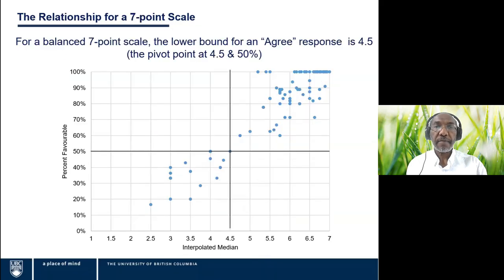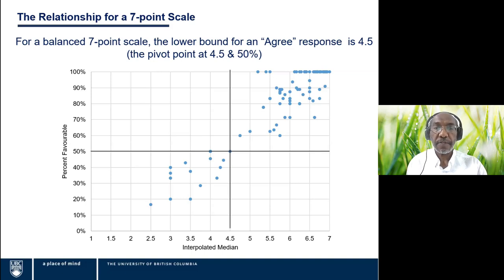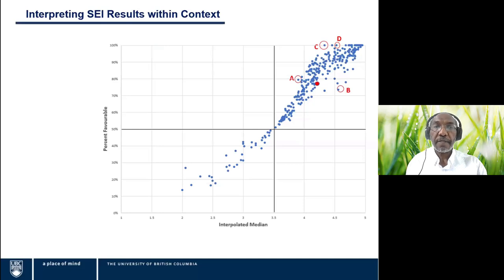This relationship holds for any balanced Likert-type scale. The data shown here is from the law school, which uses a seven-point scale. We see that the pivot point in this relationship is at an interpolated median of 4.5 and 50% favorable. On the seven-point balanced scale, responses one through three are unfavorable, four is neutral, and five through seven are favorable. The lowest favorable response is five, so the pivot point is five minus 0.5, which equals 4.5. Again, this relationship holds for all balanced scale designs.